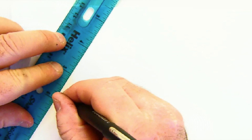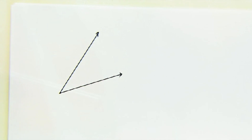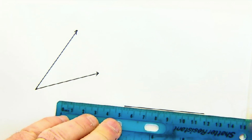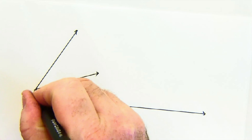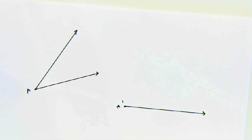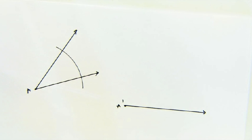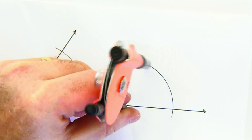Let's look at copying an angle. I'll just make any old angle. There's our angle, and we want to copy it. So I'm going to somewhere else just create a ray that will represent one of the rays of our copied angle. Let's call this point A, and so A prime will be here. Now what we're going to do is we need some more reference points, so I'm just going to take a compass and intersect my two rays. I'm going to go over to A prime and create a similar arc.